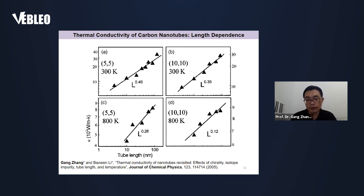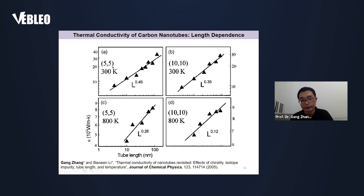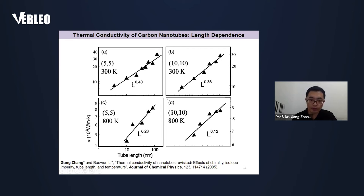But about 20 years ago, in 2005, we found that the thermal conductivity of a carbon nanotube is not a constant — it is dependent on the length. This is our work, where we used molecular dynamics simulation to study the thermal conductivity of carbon nanotubes. We found the thermal conductivity increases with the tube length following a power law. This is on a log-log scale, so the linear relationship means it is a power law. The exponent depends on the temperature and the diameter of the carbon nanotube.